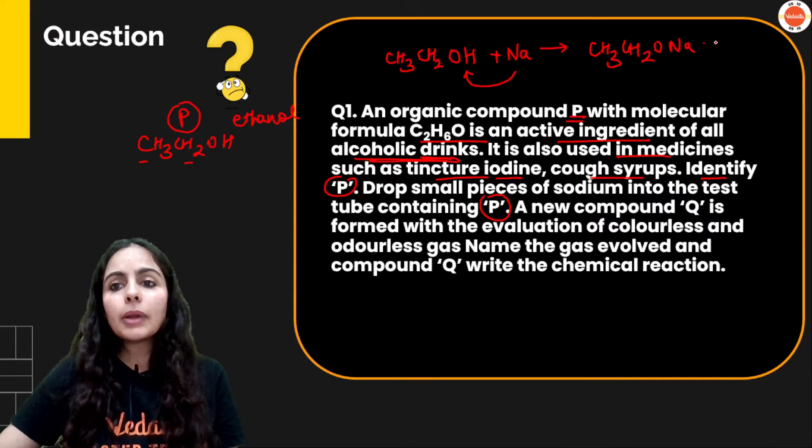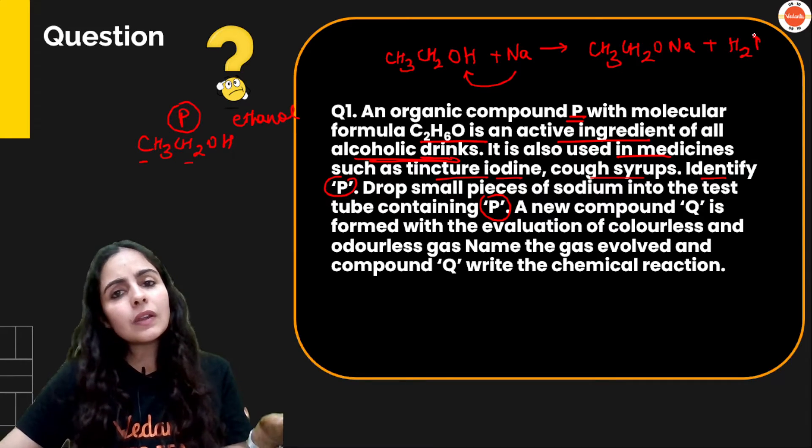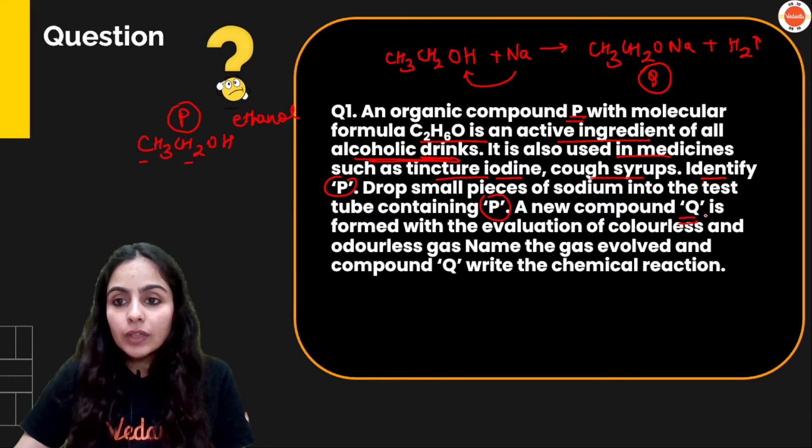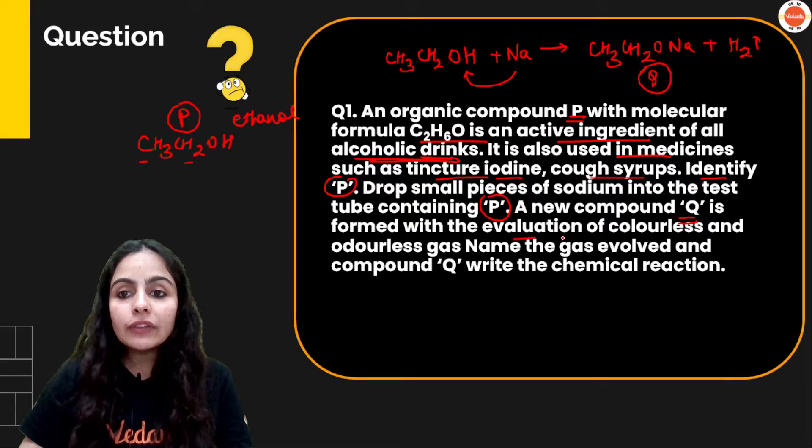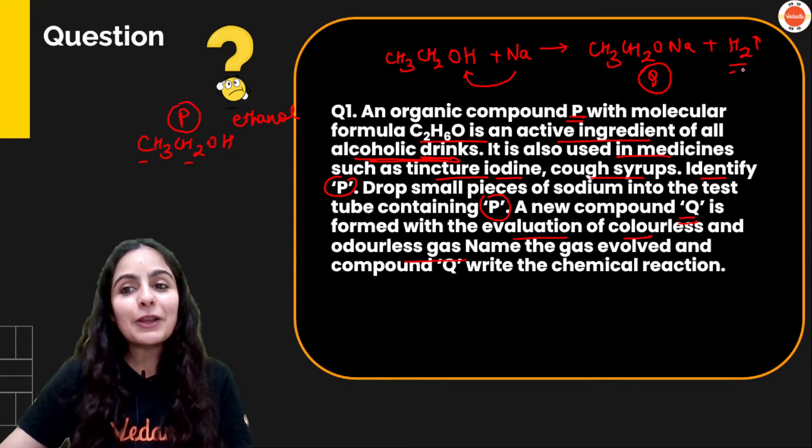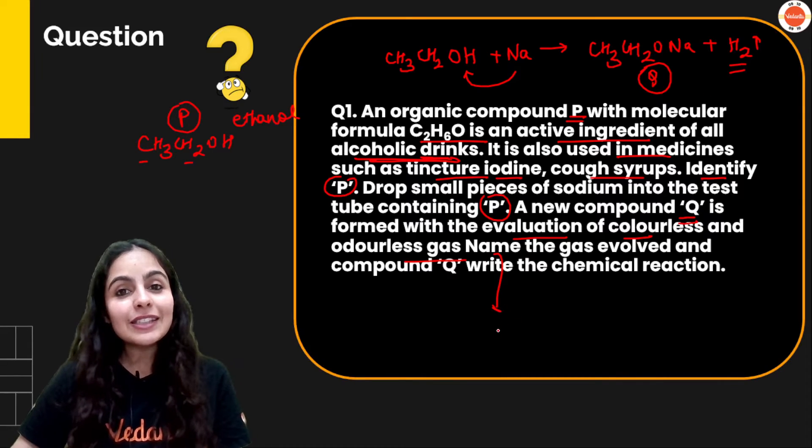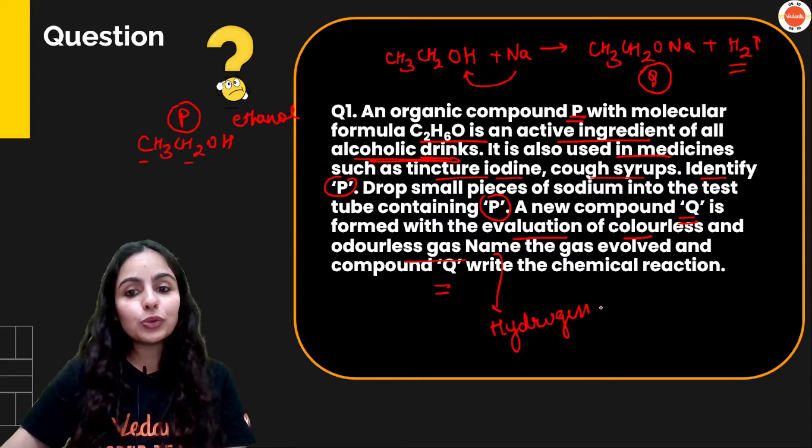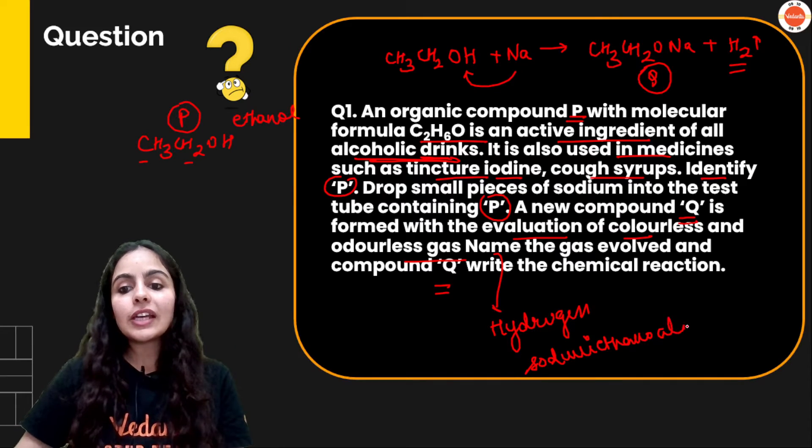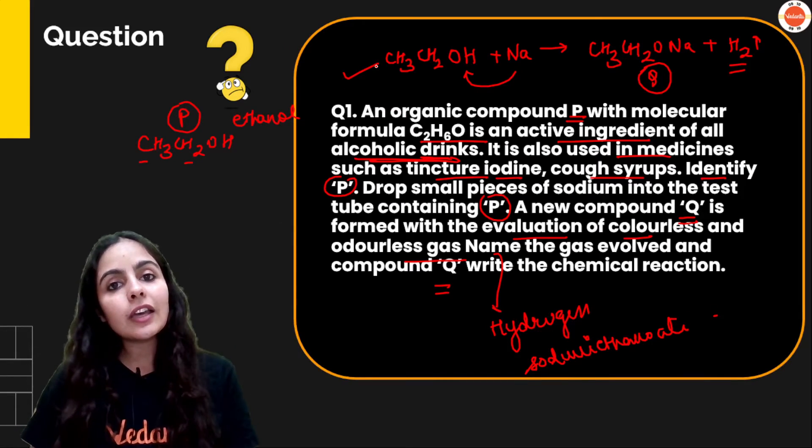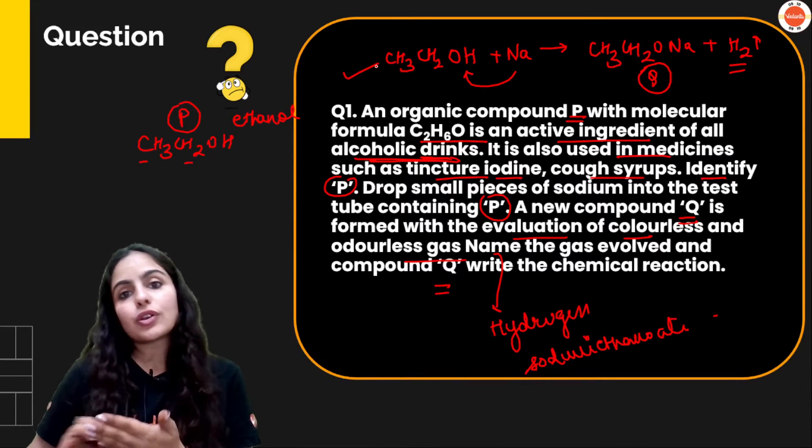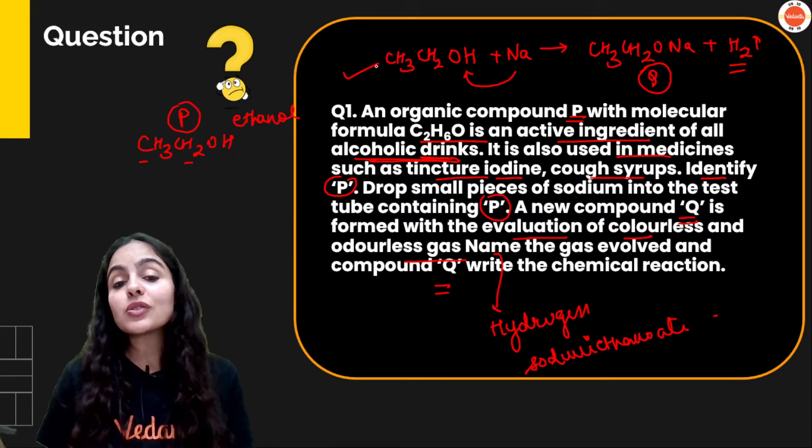CH3CH2ONa plus hydrogen will be released. A new compound Q will be made, sodium ethanoate, and is formed with the evolution of colorless odorless gas. Name the gas. Ye name the gas kya hai? Hydrogen. Simple. And compound Q is sodium ethanoate.